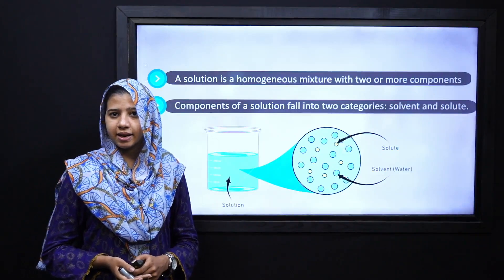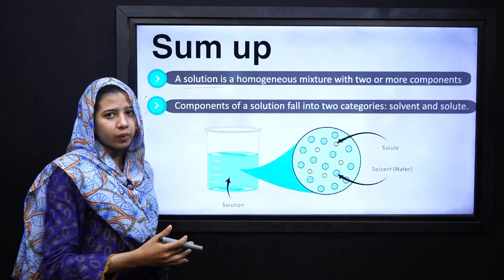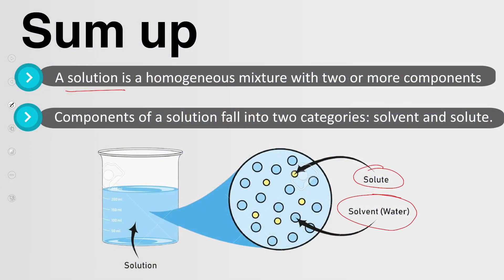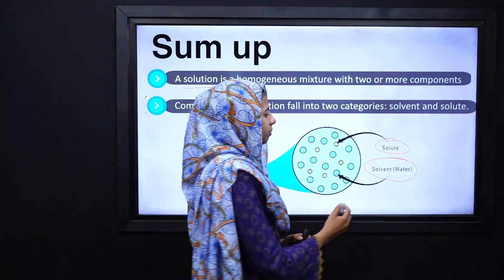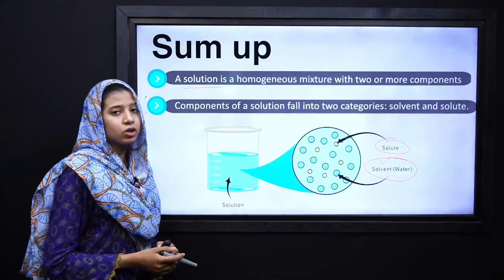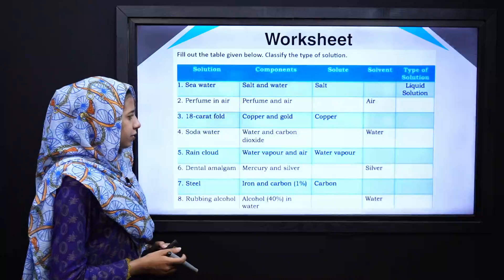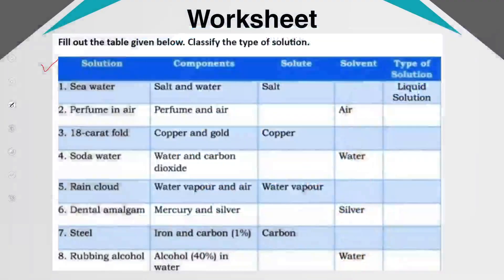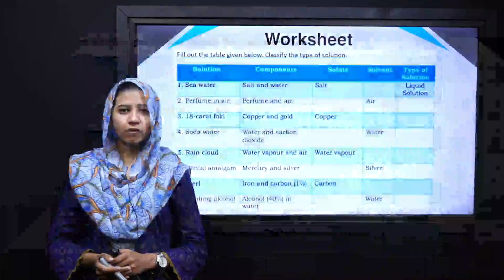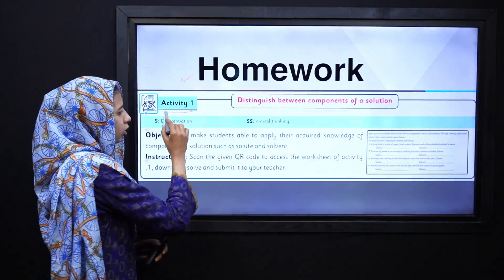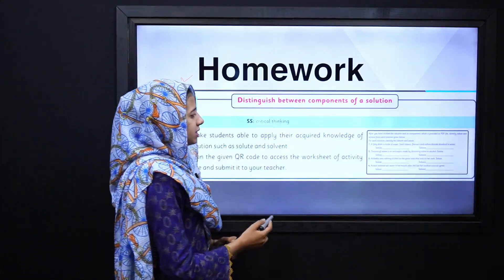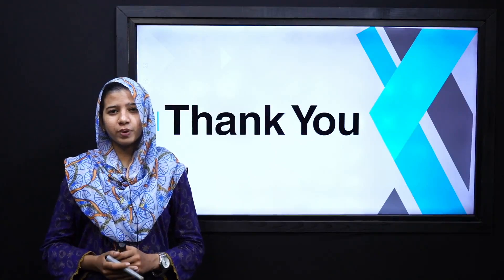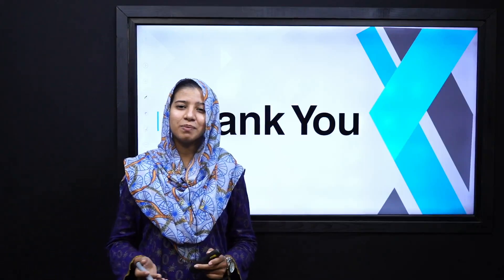In today's lecture summary: a solution is a homogeneous mixture of two or more components. The most important components are solute and solvent — the component present in the lesser amount is the solute, while the component present in the greater amount is the solvent. Here is the worksheet; the link is given in the description. Pause your video and solve the skill sheet. Your homework is Activity Number 1 — the link is also in the description. In our next lecture, we will proceed with new topics. Thank you very much. Allah Hafiz.